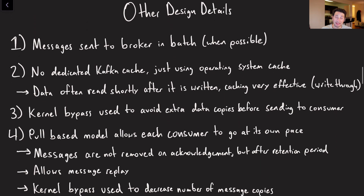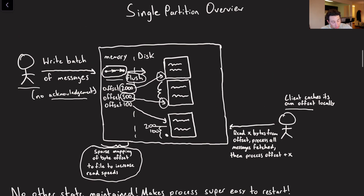Let's list a few more specific design details about this broker. Number one, we have this nice batch API to limit the amount of network bandwidth that we're using. Number two is that Kafka does not do any dedicated caching of files or messages on its own — it just employs the operating system cache. The operating system cache is pretty effective here because, effectively, as long as we do write-through caching, it's not going to be very long before the consumer reads that file. So as long as our operating system cache is slightly big enough and our consumer isn't lagging too far behind our producer, a write-through cache should be very efficient. We can always use an LRU replacement policy if need be.